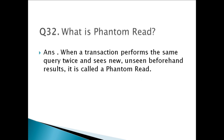Question thirty-two: What is a phantom read? When a transaction performs the same query twice and sees new, previously unseen results, it is called a phantom read. For example: transaction 1 looks for books with prices between 50 and 90 and finds two books satisfying this condition. In the meantime, transaction 2 adds a new book with a price of 60. When transaction 1 queries the data again, it finds three books. This is a phantom read.